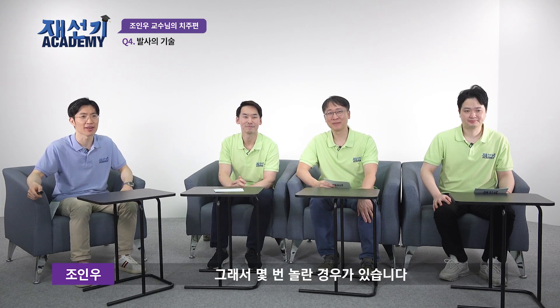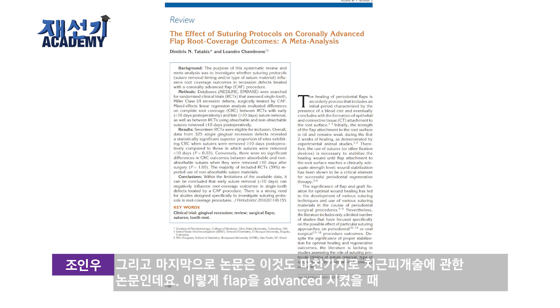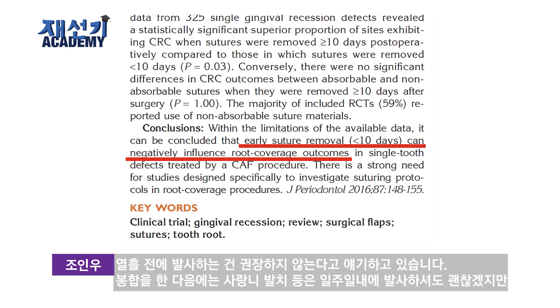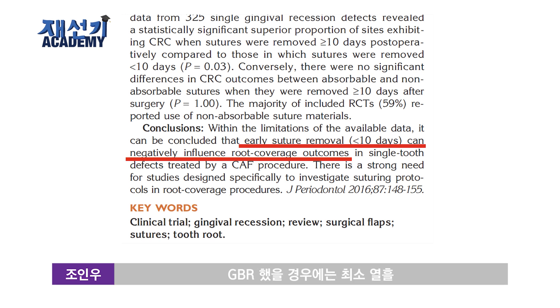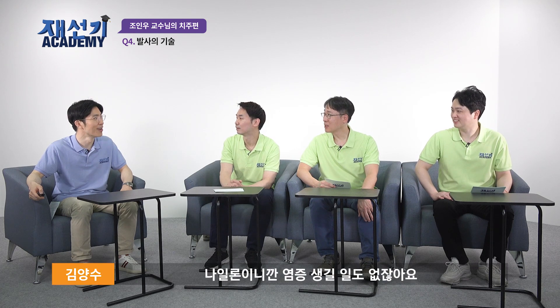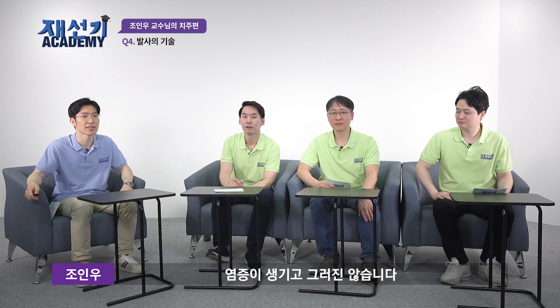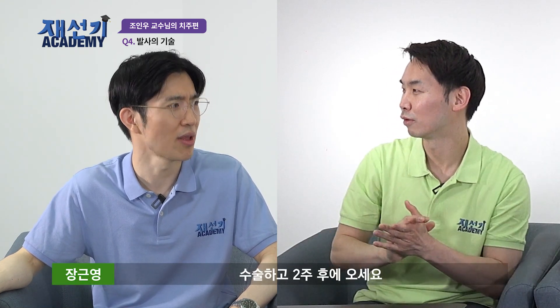플랩을 어드밴스드 시켰을 때, 예를 들어 임플란트 후 GBR 한 경우에는 텐션이 남아 있을 수 있기 때문에 열흘 전에 발사하는 건 권장하지 않습니다. 단순 봉합 후에는 일주일에 발사해도 괜찮지만, GBR을 했을 경우에는 최소 열흘에서 2주 전후로 기다렸다 발사하는 게 좋습니다.